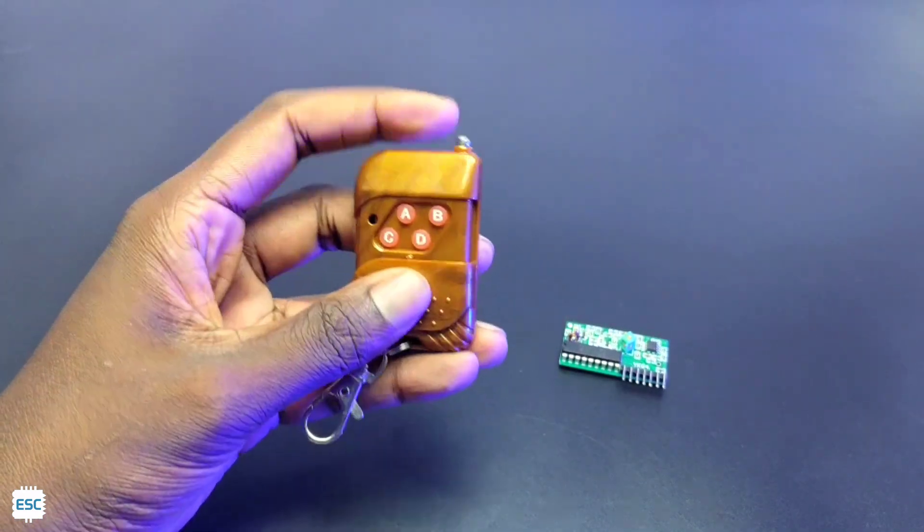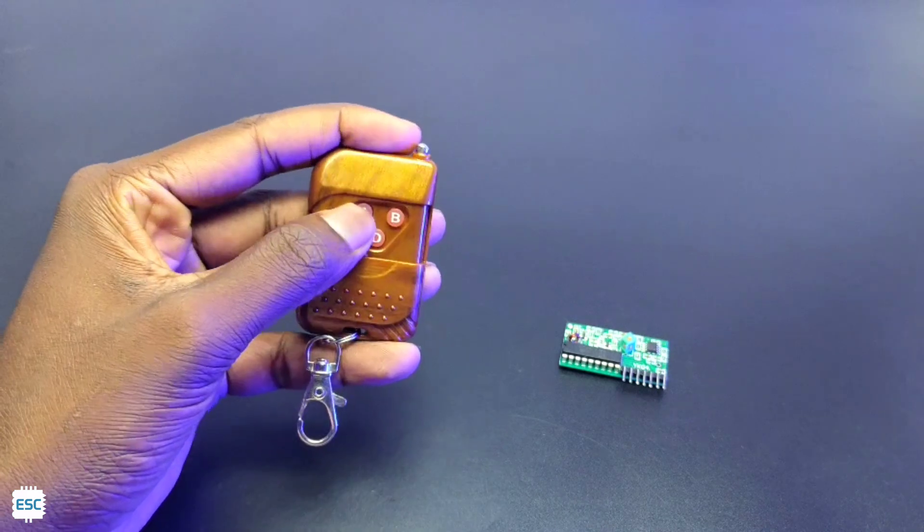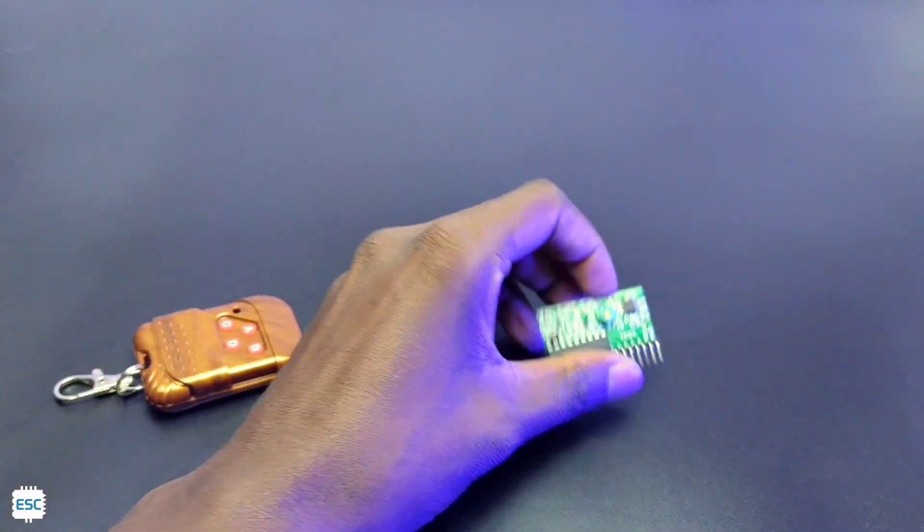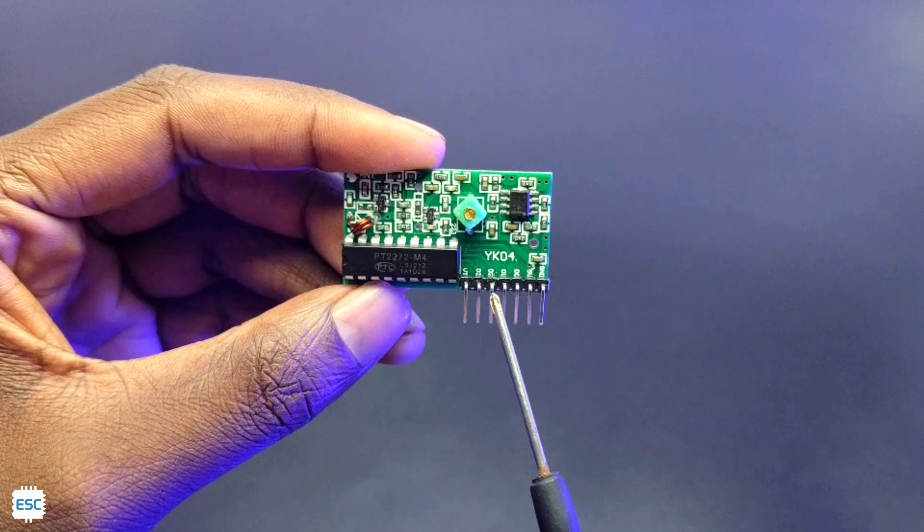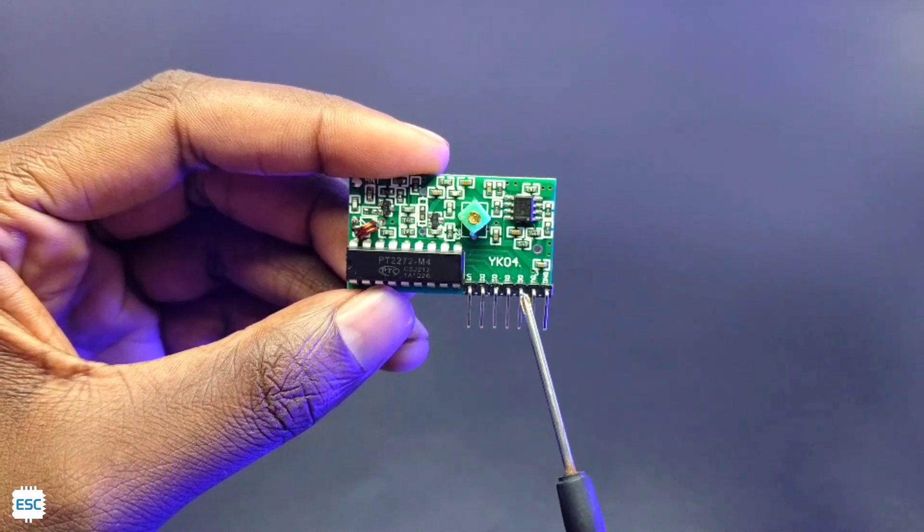This one is coming with a handy remote which has four buttons. The receiver module has two power pins, four outputs and one VT pin.